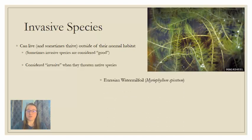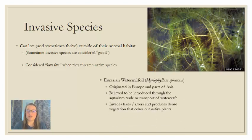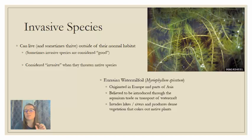Another example is Eurasian watermilfoil, a fully aquatic plant that also originated in Europe and parts of Asia. It is believed to have been introduced through the aquarium trade or from the transport of watercraft. If you don't spray off your boat between lakes, you could transport small pieces of this plant to new water bodies. Eurasian watermilfoil can propagate from a tiny piece, and it grows so dense that it prevents sunlight from reaching native plants on the bottom.